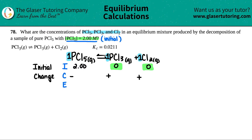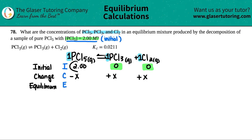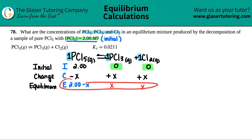The E row stands for Equilibrium — it's just your I and C rows combined. So PCl5 at equilibrium is 2.00 − x, and for the products, zero plus x is just x for both PCl3 and Cl2. Now we're ready to use these equilibrium values in our Kc expression.